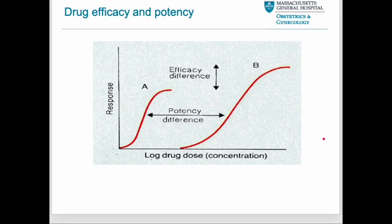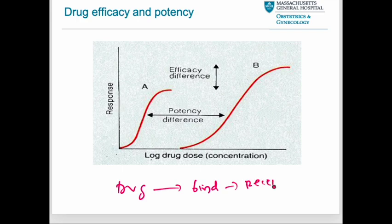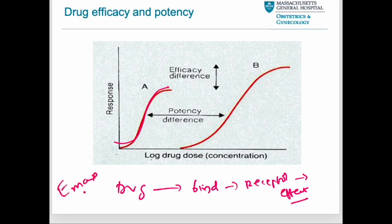Drug efficacy is the ability of a drug, after binding with receptors, to initiate a change that leads to a certain effect. Emax, or maximum efficacy, is the capacity of the drug to produce the maximum response — the maximum response that can be elicited by a drug. Efficacy is the ability of the drug to elicit a physiological response when interacting with the receptor.